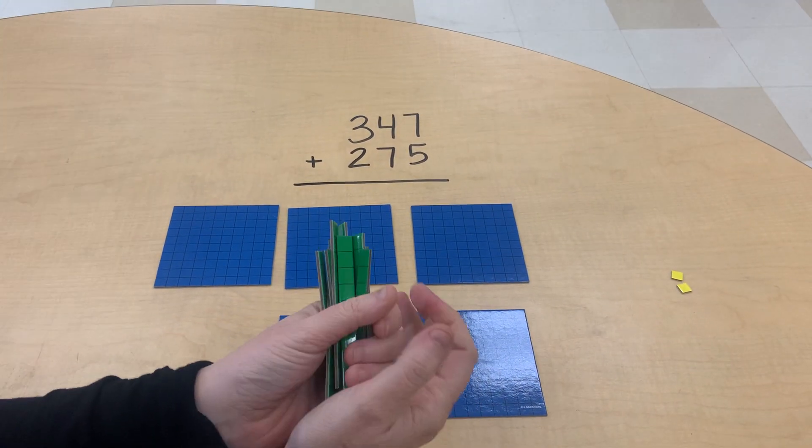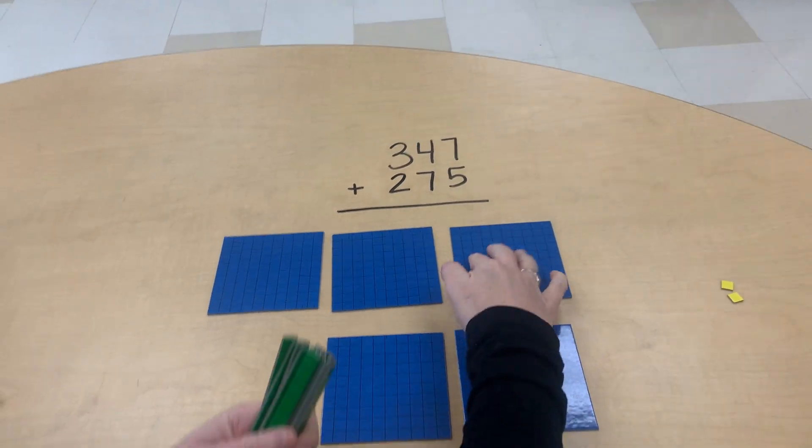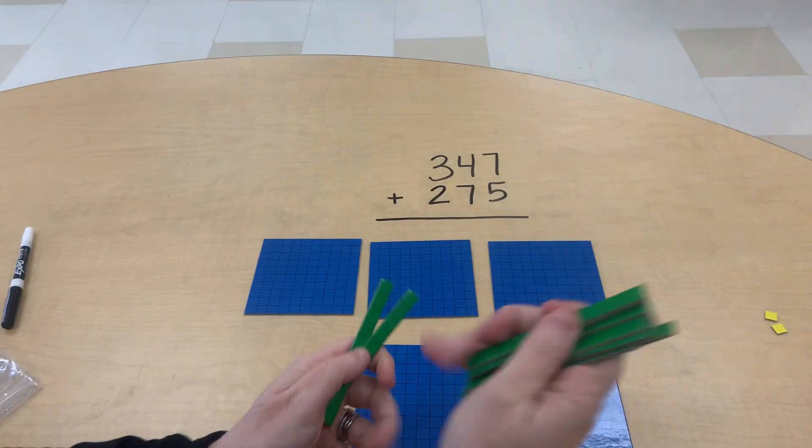So we have twelve tens rods. And our students know that ten tens makes a one hundred. So we can trade out ten tens.